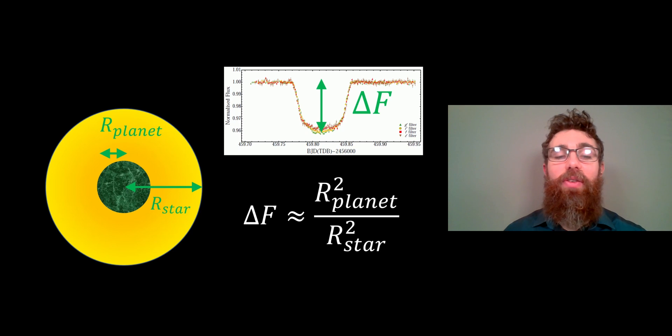We can rearrange that for the radius of the planet, and there we are—we have the radius of the planet. But I should note that we do need to have the radius of the star in order to do that.